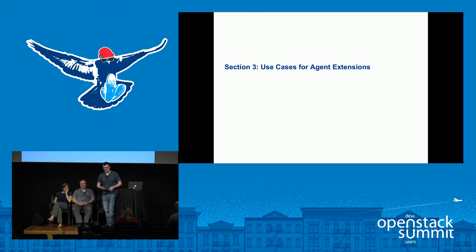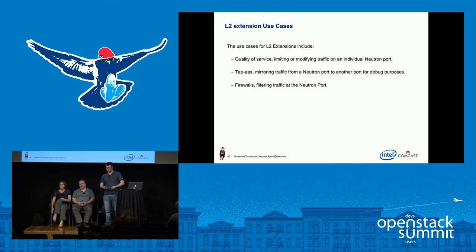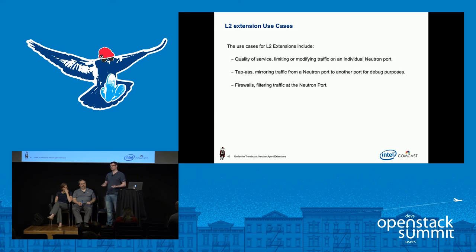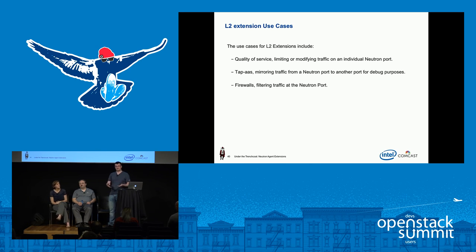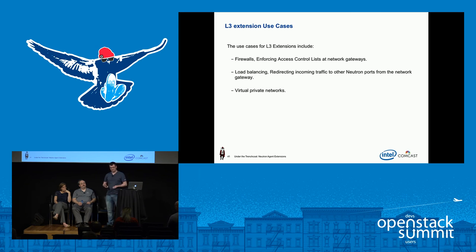In section three I'll run over the use cases for agent extensions and future work currently in progress. The use cases for L2 extensions include QoS, tap, and firewalls. The L2 extension updates every time a port is updated, making it very good for QoS — putting limits on bandwidth for each port — and for tap, where you can mirror traffic from ports to an external port for debugging.